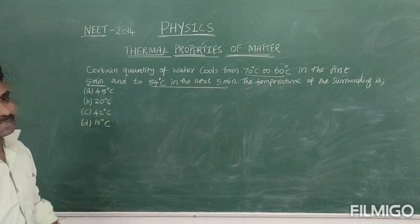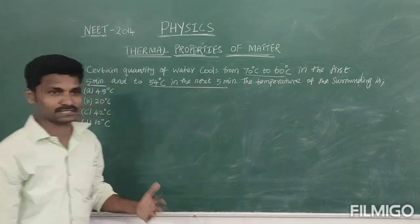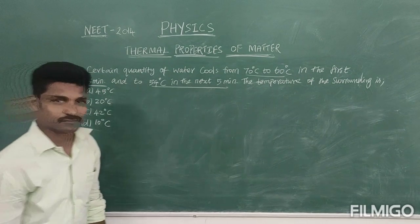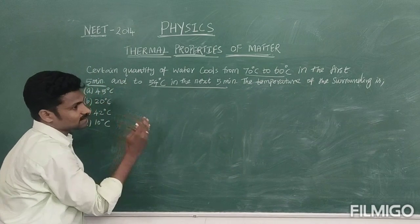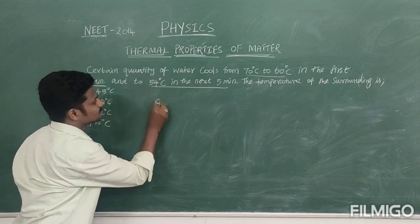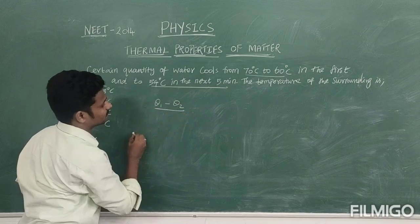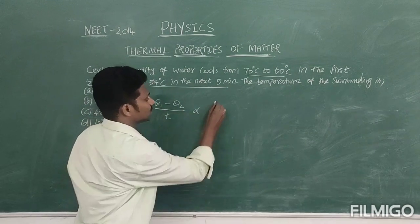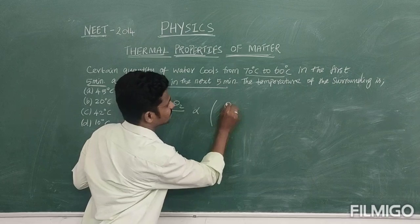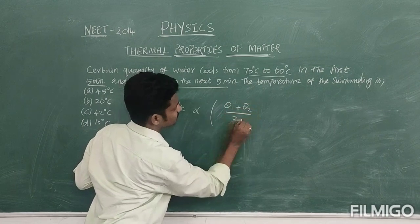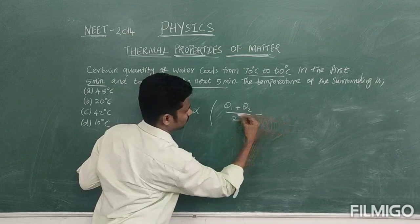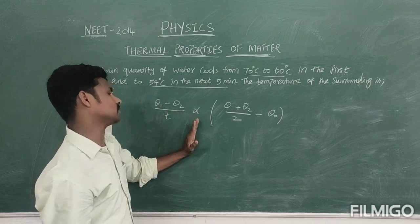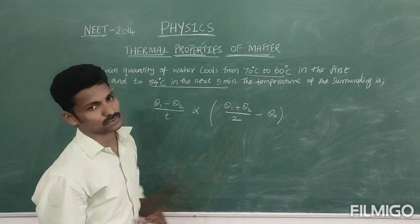Whenever we compare the temperature of the surrounding and the system temperature, we immediately remember that it is Newton's law of cooling. We know that Newton's law of cooling states that the rate of loss of heat — that is, (θ₁ − θ₂) divided by time — is directly proportional to the difference between the system temperature and the surrounding temperature.